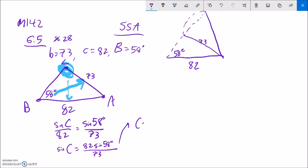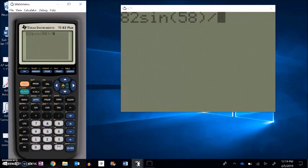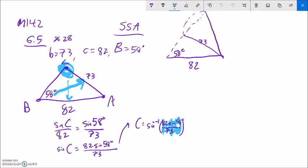C is that inverse sine of whatever this value is, 82 sine of 58 divided by 73. Then I'm going to take a peek at my calculator. First off, I'll figure out just the first part, which was 82 times the sine of 58, close off those parentheses, and then divide by 73.